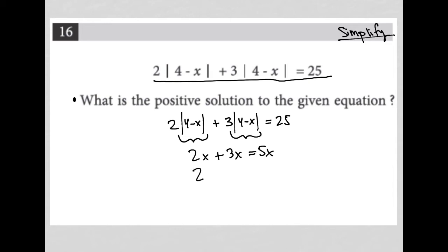what I'm basically saying is that 2 absolute value 4 minus x, plus 3 absolute value 4 minus x, is equal to 5 absolute value 4 minus x. So there's my simplification. That is then equal to my 25 that I had from the original question.